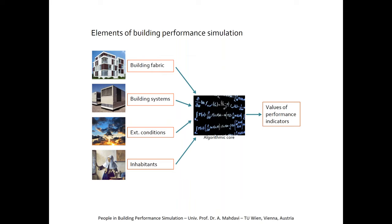If you compare various aspects of buildings subject to modeling, I distinguish four basic areas. You represent the building fabric — the basic architectural entity, the building envelope. You also have certain environmental systems, depending on the building, for heating, cooling, ventilation, and lighting. And you model the external boundary conditions — the weather conditions, solar radiation, and all issues impacting buildings' performance.